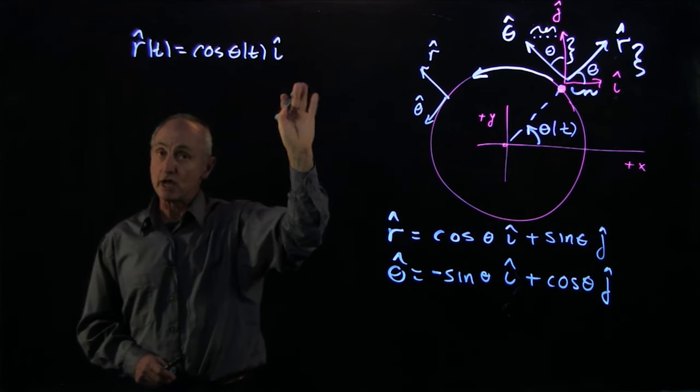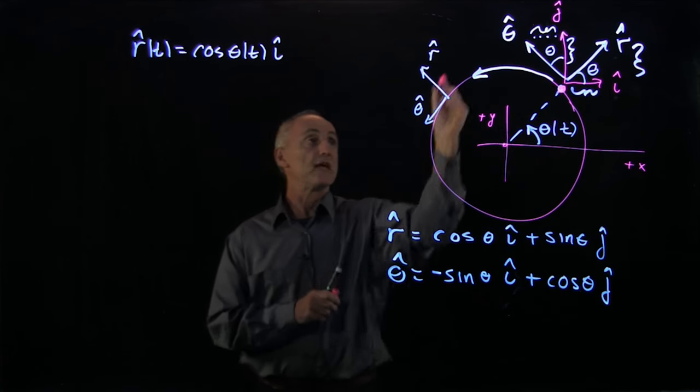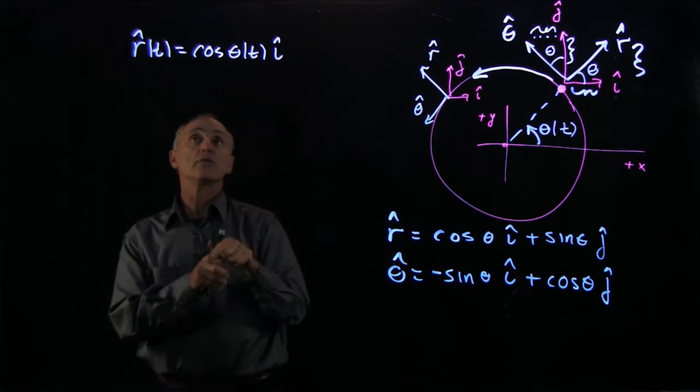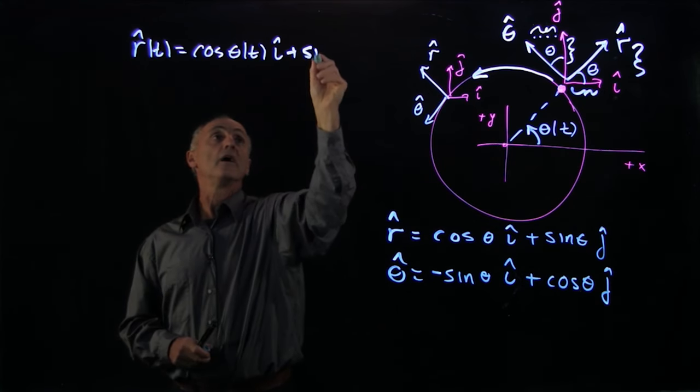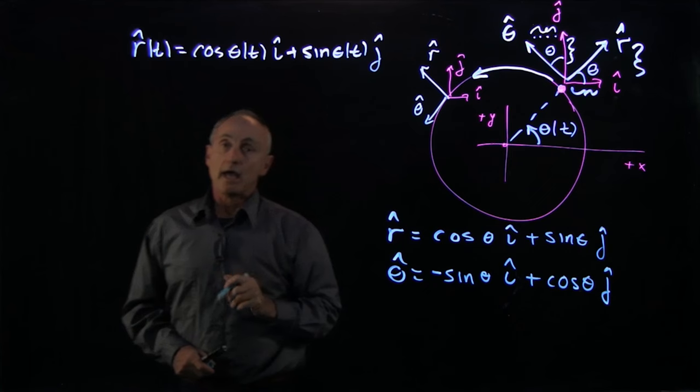So what we actually have as functions of time is r hat of t equals cosine theta of t i hat. Now, the unit vectors don't change in Cartesian coordinates. At every single point, you have the same Cartesian unit vectors. And so this vector is time dependent.